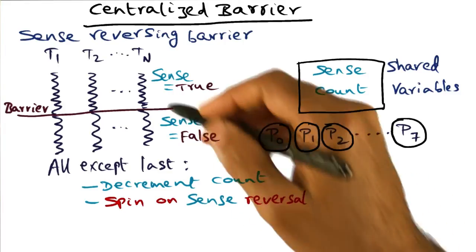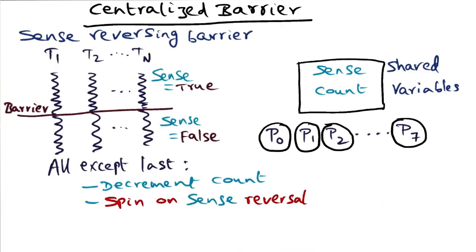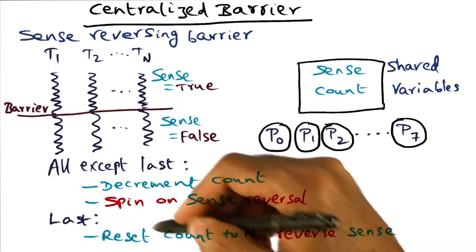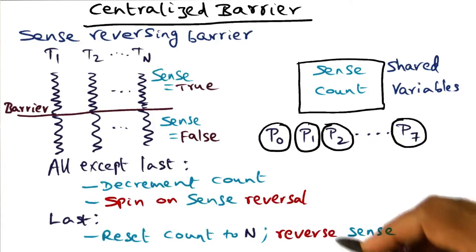That's the idea behind what all the processors will do except the last one. What will the last one do? Well, you guessed it. The last one, in addition to resetting the count to n, which was happening in the counting barrier, it is also going to reverse the sense flag.